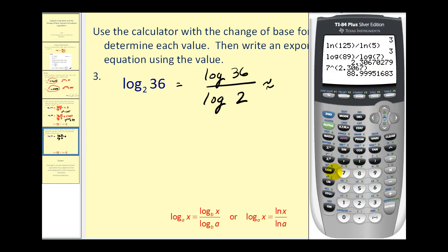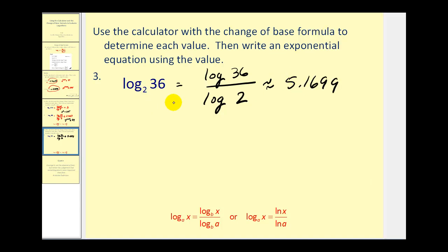Let's go to our calculator. Log 36 divided by log 2. Approximately 5.1699.